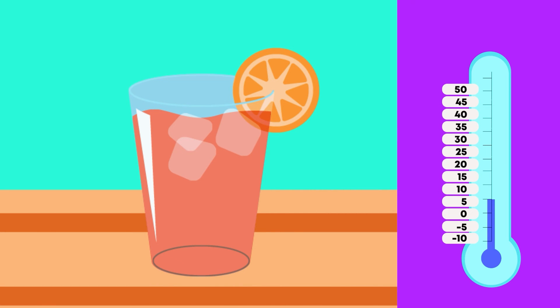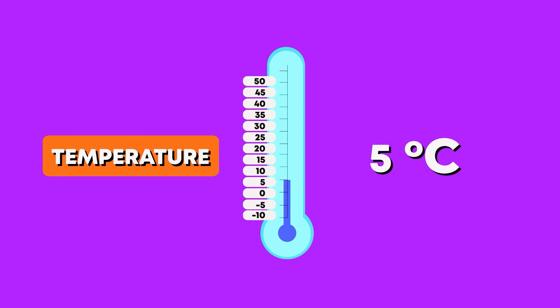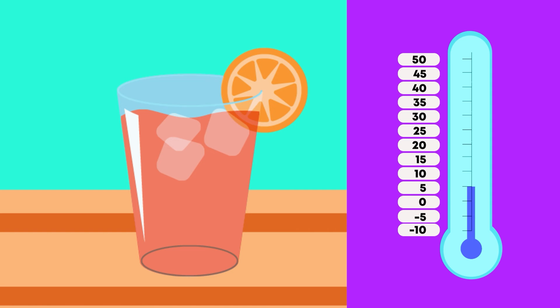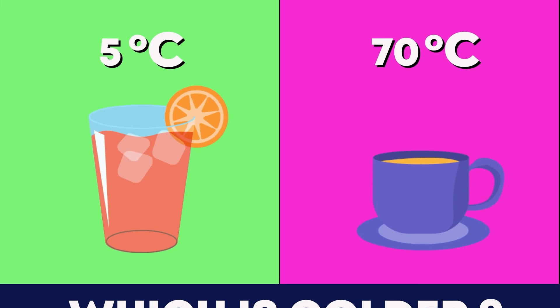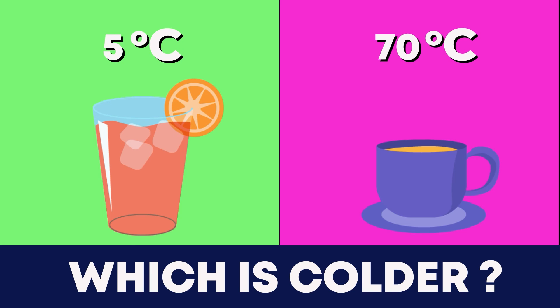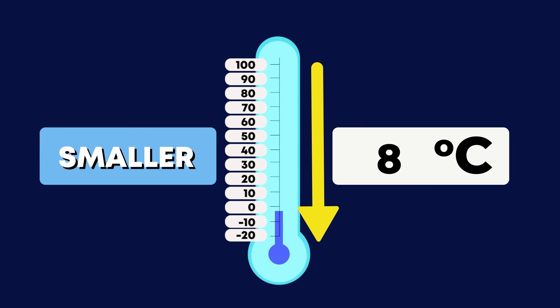Now let's measure the temperature of the cup of iced tea. What happened? Because the temperature decreased or got lower, the number on the thermometer got lower. The marker is halfway between 0 and 10 degrees Celsius — the iced tea is 5 degrees Celsius. Which is colder, the tea or the iced tea? The iced tea is colder. We know this because 5 degrees Celsius is less than 70 degrees Celsius. The smaller the number on the thermometer scale, the lower the temperature.